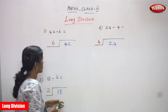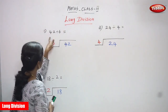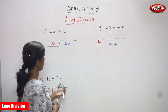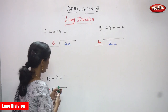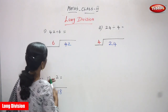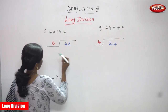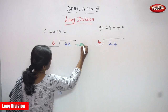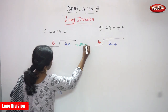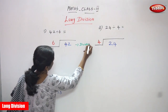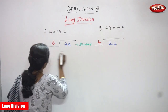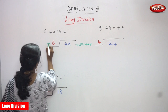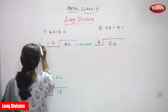Now we are going to see long division. So 42 is divided by 6. So 42 is a what? That is dividend. And 6 is a what? Divisor.